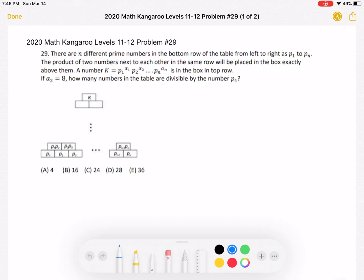If alpha 2 is 8, how many numbers in the table are divisible by the number P4? A, 4, B, 16, C, 24, D, 28, or E, 36.